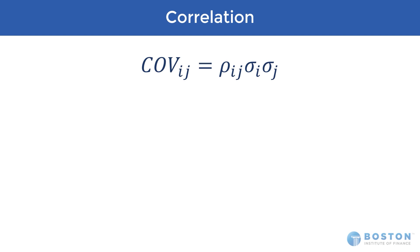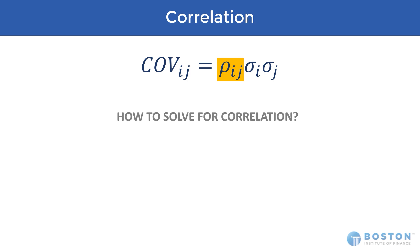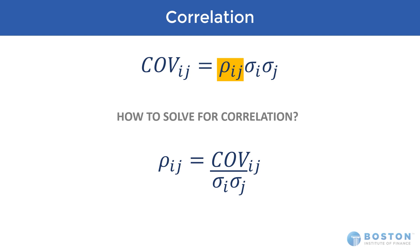Correlation is part of the covariance formula and you can see it here. The formula to solve for correlation is not on the provided formula sheet itself, but we can easily figure it out by adjusting the covariance formula using basic algebra. We move correlation to the left side of the equation and shift covariance into the numerator position on the right side. Take a look at these two formulas and notice that they are using the same basic variables in slightly different ways.